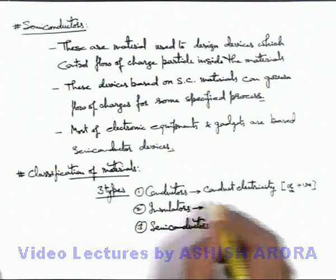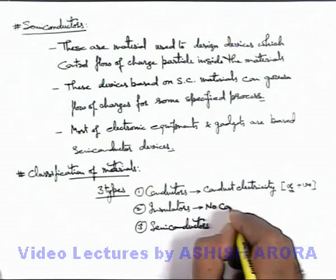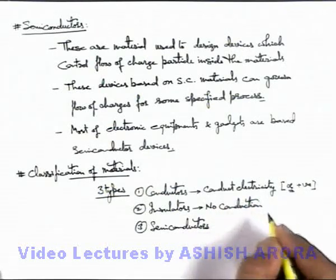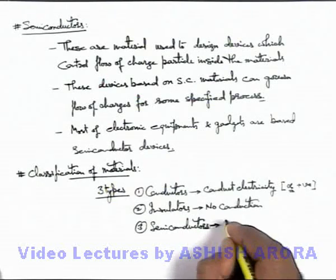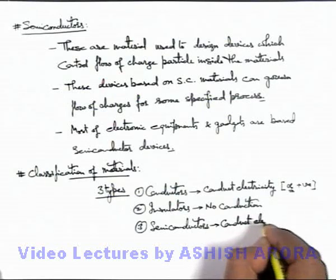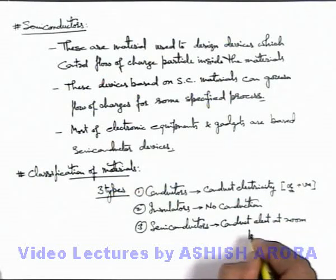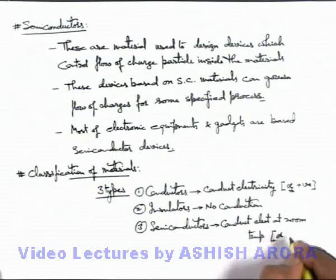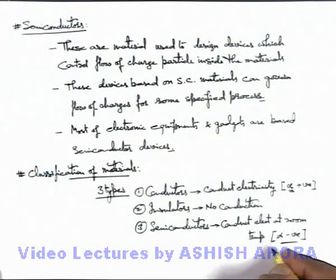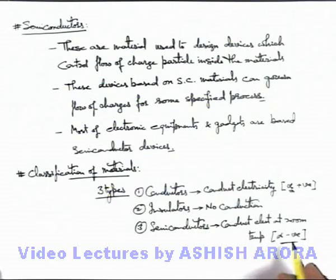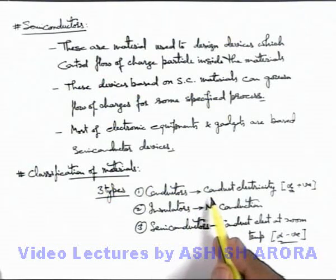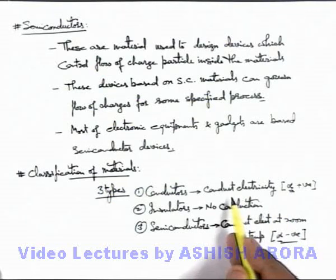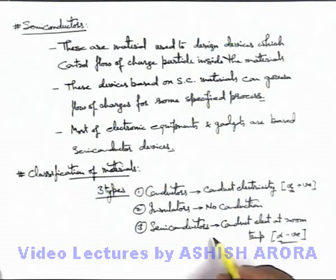Insulators are those which do not conduct electricity — there is no conduction in the case of insulators. Semiconductors are those which conduct electricity at room temperature, with their temperature coefficient of resistance being negative. That implies that if temperature increases, the resistivity of a semiconductor decreases, or their conductivity increases. So this difference is quite important to keep in mind: for conductors or normal metals, with temperature their conductivity decreases, and in case of semiconductors, with temperature their conductivity increases.